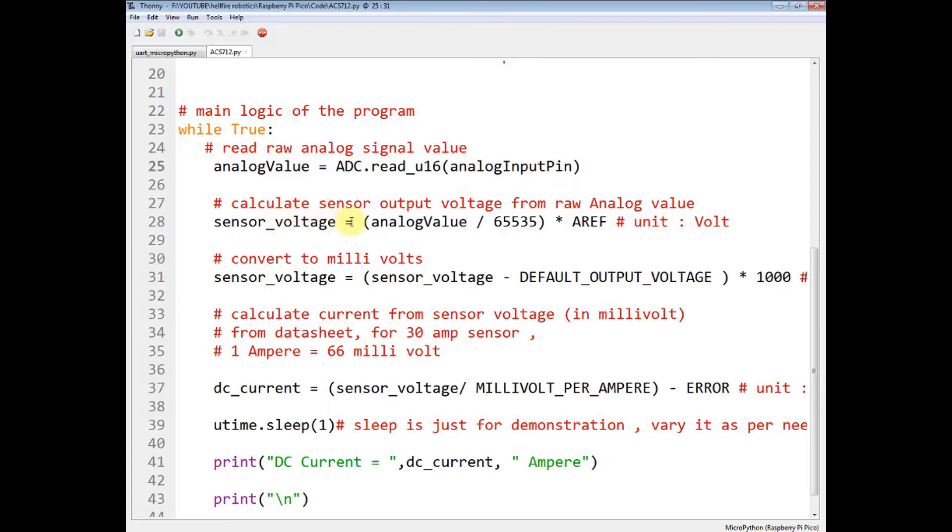Now you have to calculate the sensor's output voltage from the raw analog input. So sensor voltage is equal to this analog value divided by the maximum range of the ADC at 16-bit resolution and multiply with the analog reference voltage.